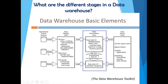So the different stages are: your source stage, your staging area where you clean and store the data, and then your data presentation or data warehouse area where business rules are applied. On top of the presentation area you use your data access tools, and inputs from those tools can also be loaded back into data marts, which can act as sources for the data warehouse as well. That is how data warehouse architecture basically looks.